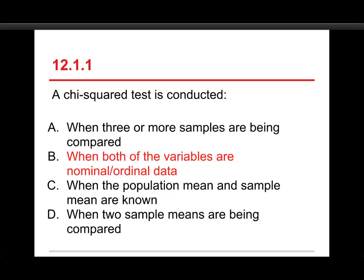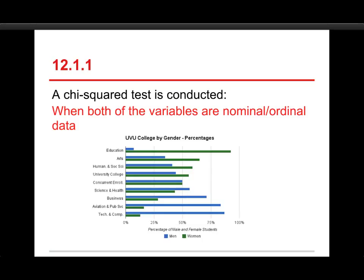The answer to this one is B. I'll show you in a second, but A, when three or more samples are being compared, you'd want to use an analysis of variance for that as long as it's a quantitative outcome variable, so interval or ratio level. C, when the population mean and sample mean are known, that sounds like a situation where you could do a t-test or analysis of variance. And D, when two sample means are being compared, that's usually a two-sample t-test.